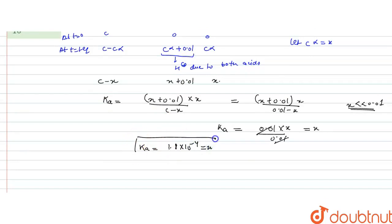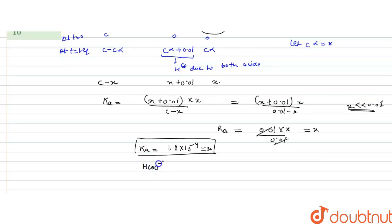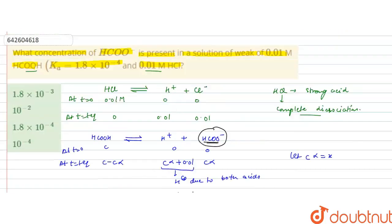So Ka = X, meaning the concentration of HCOO⁻, which we assumed as X (or C·alpha), equals 1.8×10⁻⁴ molar. This makes sense because HCOOH is a weak acid and forms very little HCOO⁻, justifying our approximation of neglecting X compared to 0.01. The answer to this question is concentration of HCOO⁻ = 1.8×10⁻⁴ molar, which is option C. I hope you understood the solution, thank you.